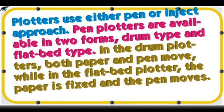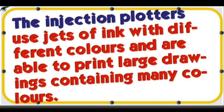Pen plotters are available in two forms: drum type and flatbed type. In drum plotters, both paper and pen move, while in the flatbed plotter, the paper is fixed and the pen moves. Inkjet plotters use jets of ink with different colors and are able to print large drawings containing many colors.